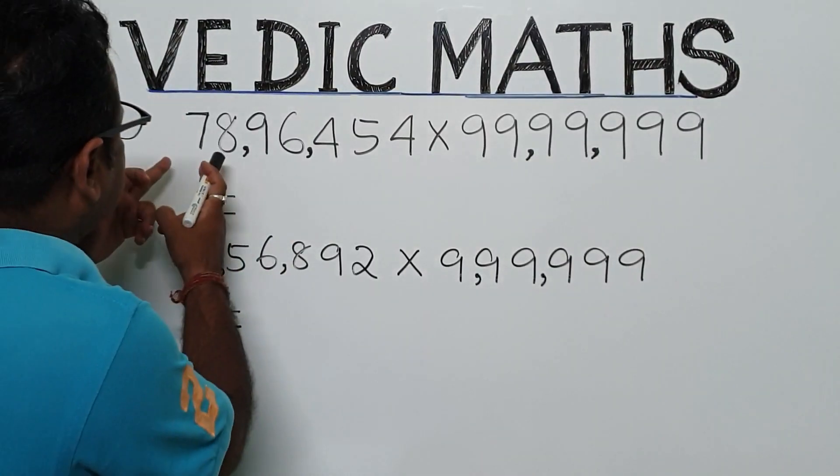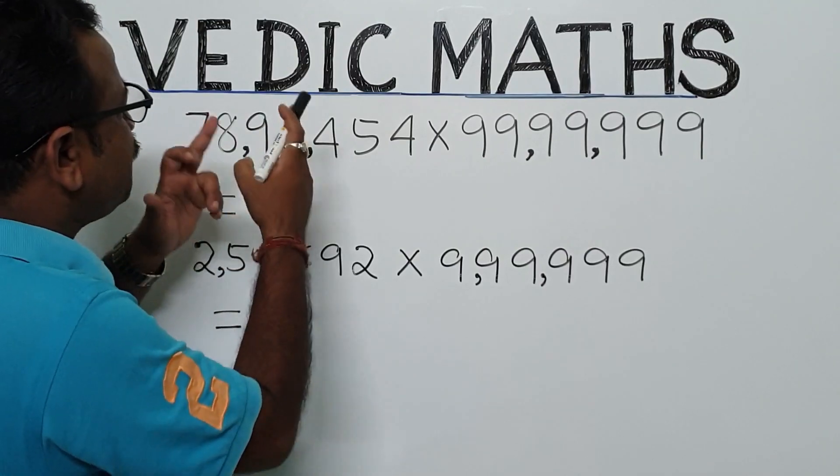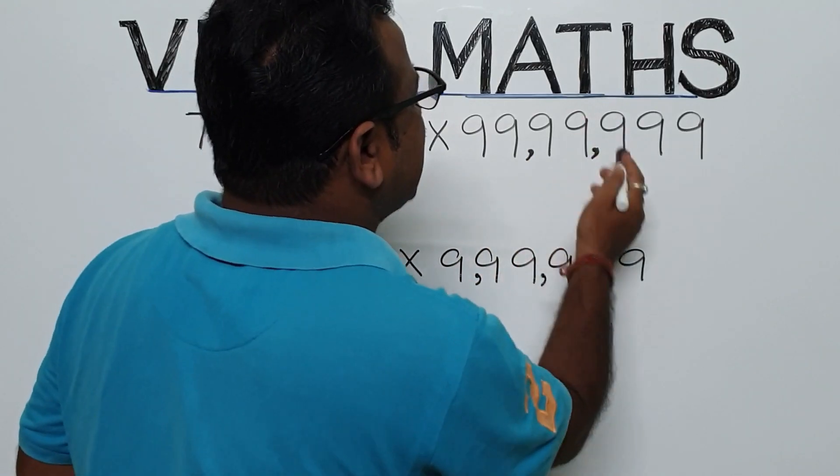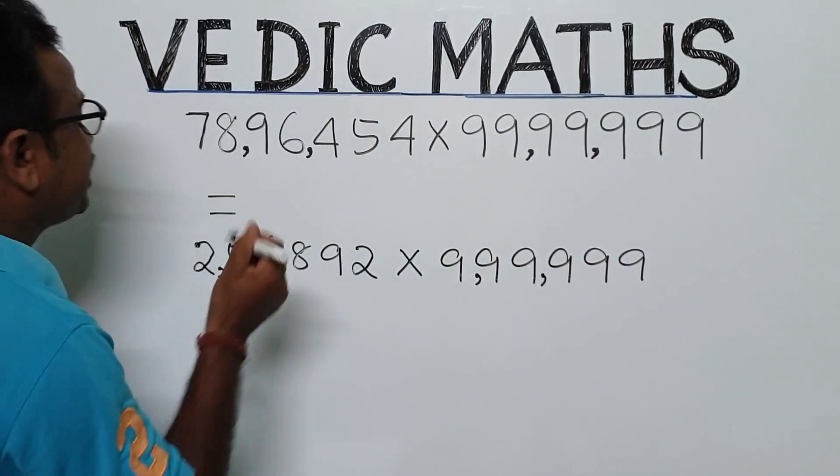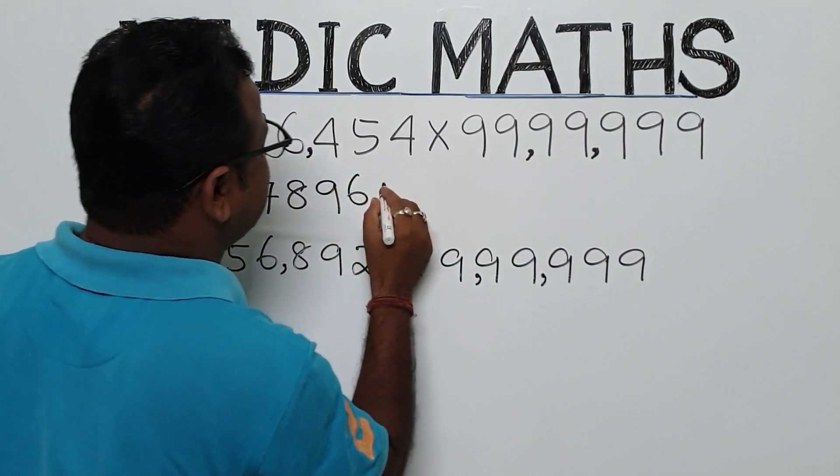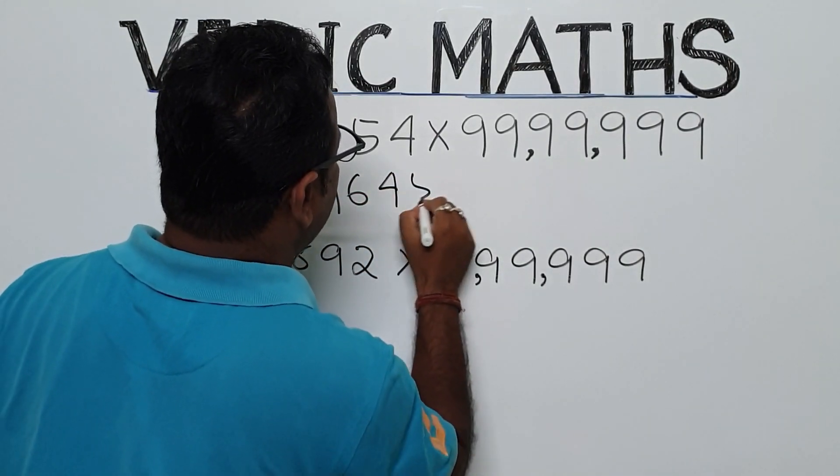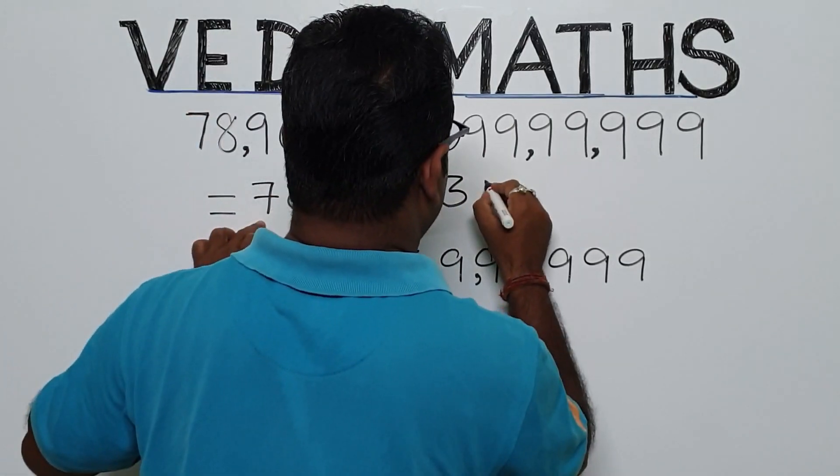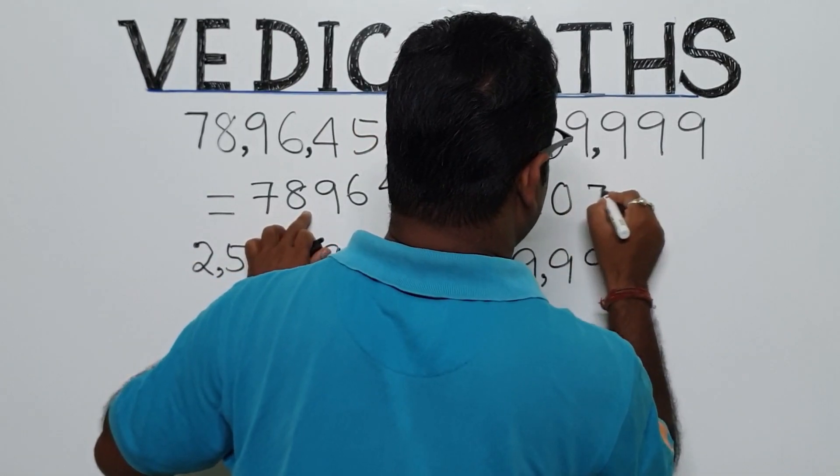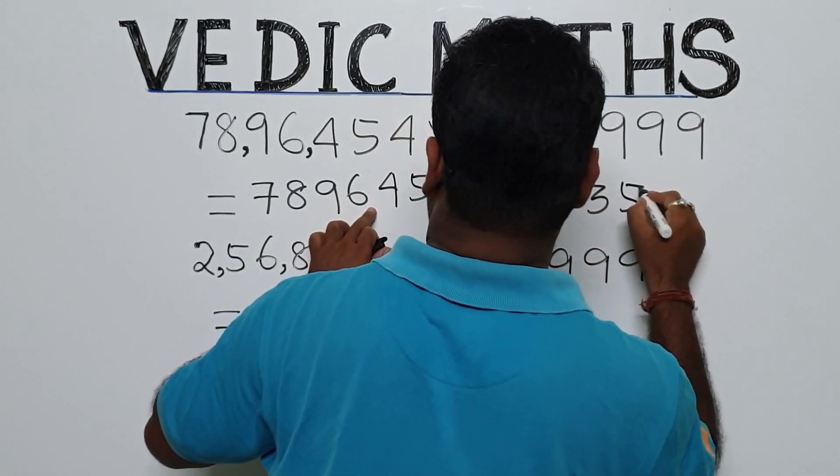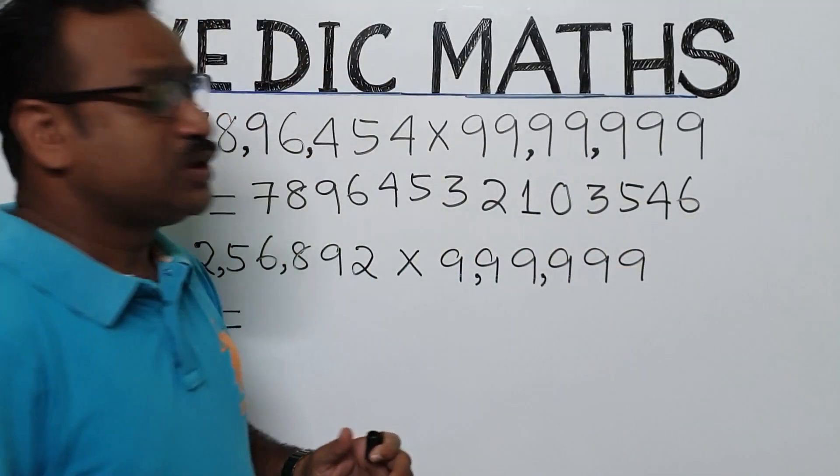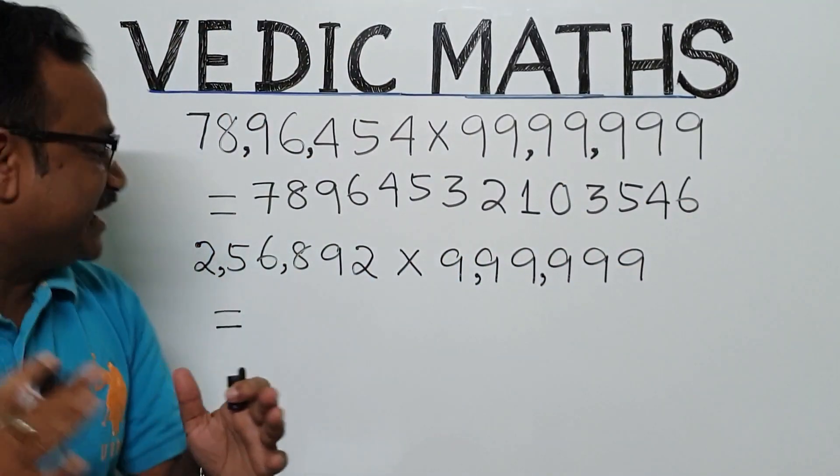What is the product of 78,96,454 into 99,99,999? The result is 7,8,9,6,4,5,3,2,1,0,3,5,4,6. Now we will see the next.